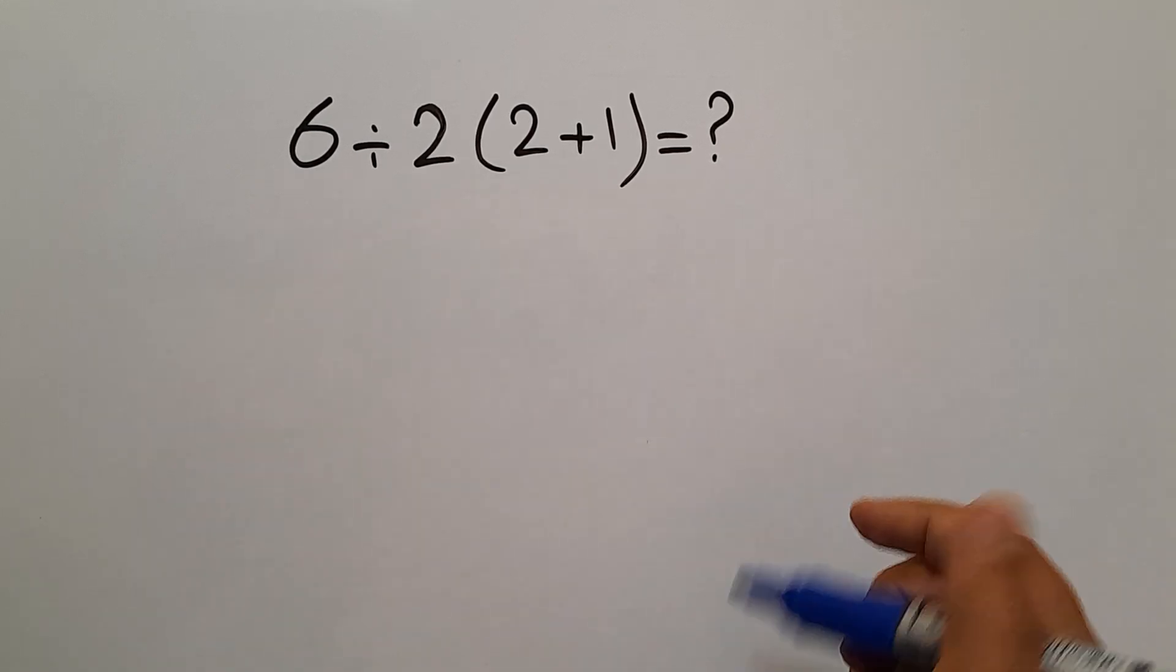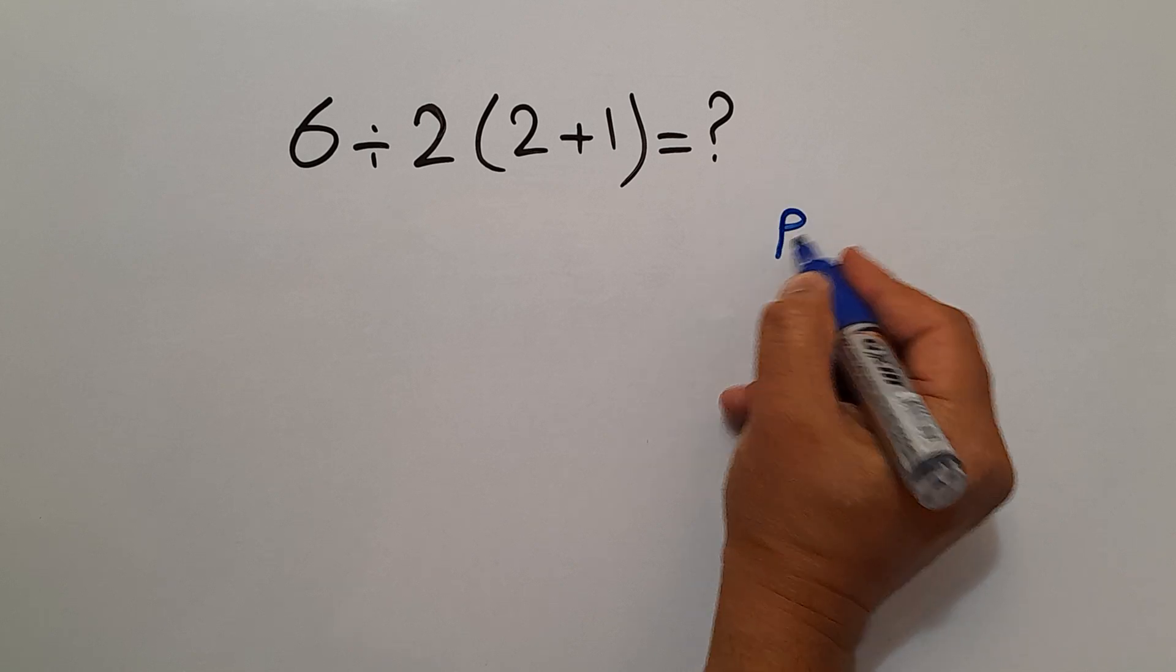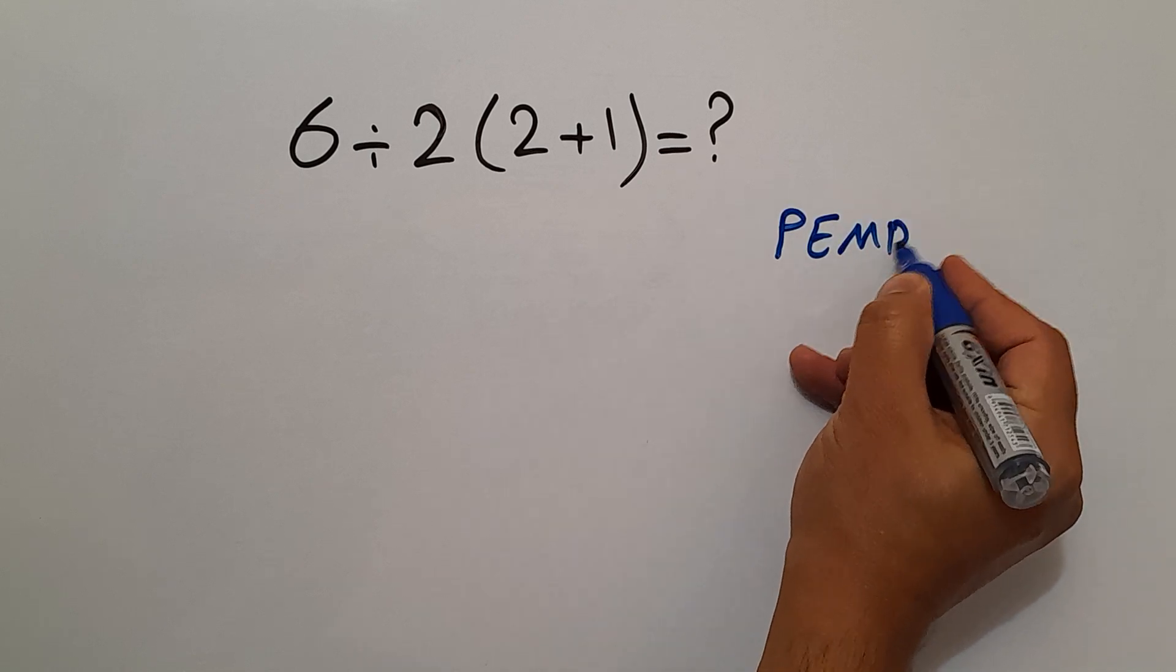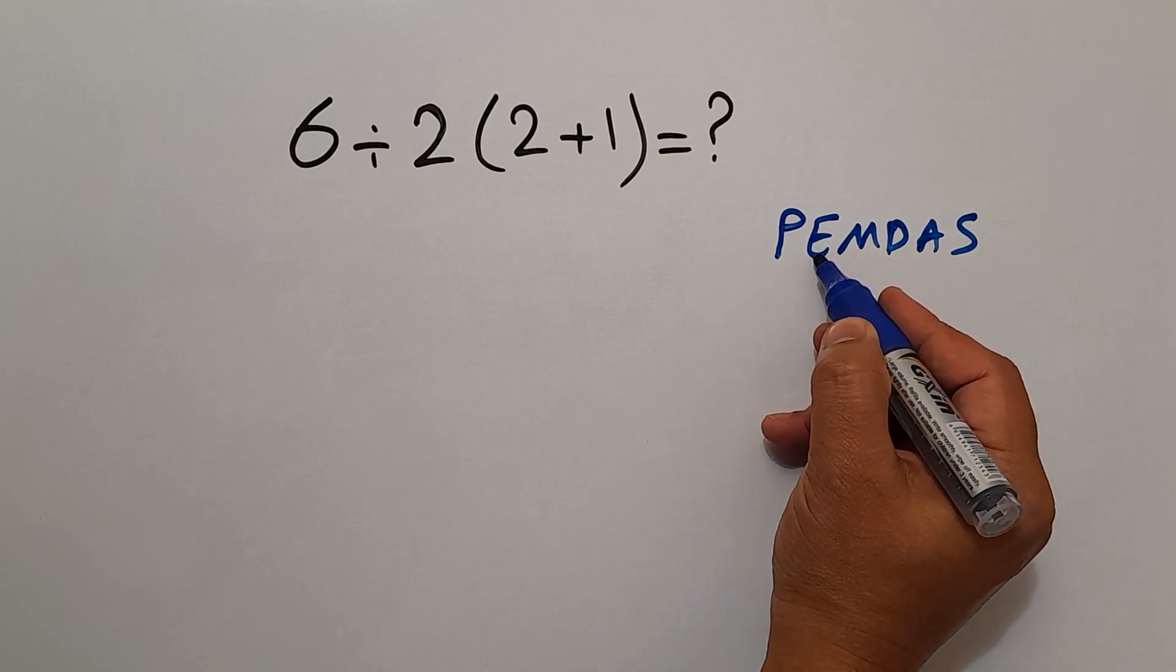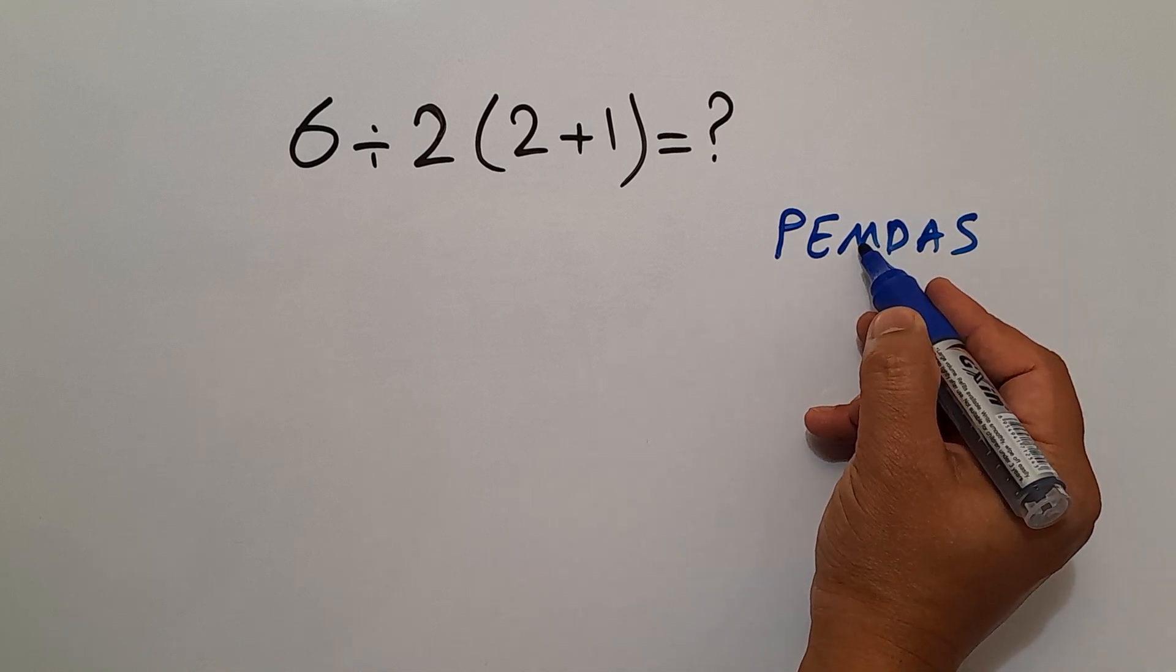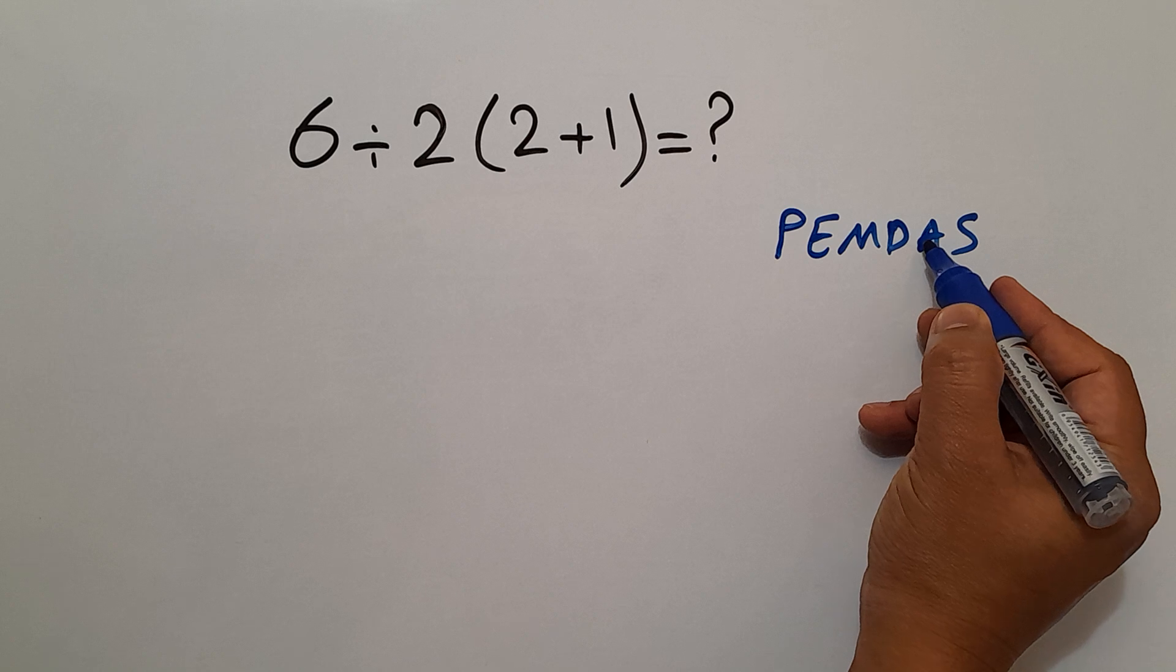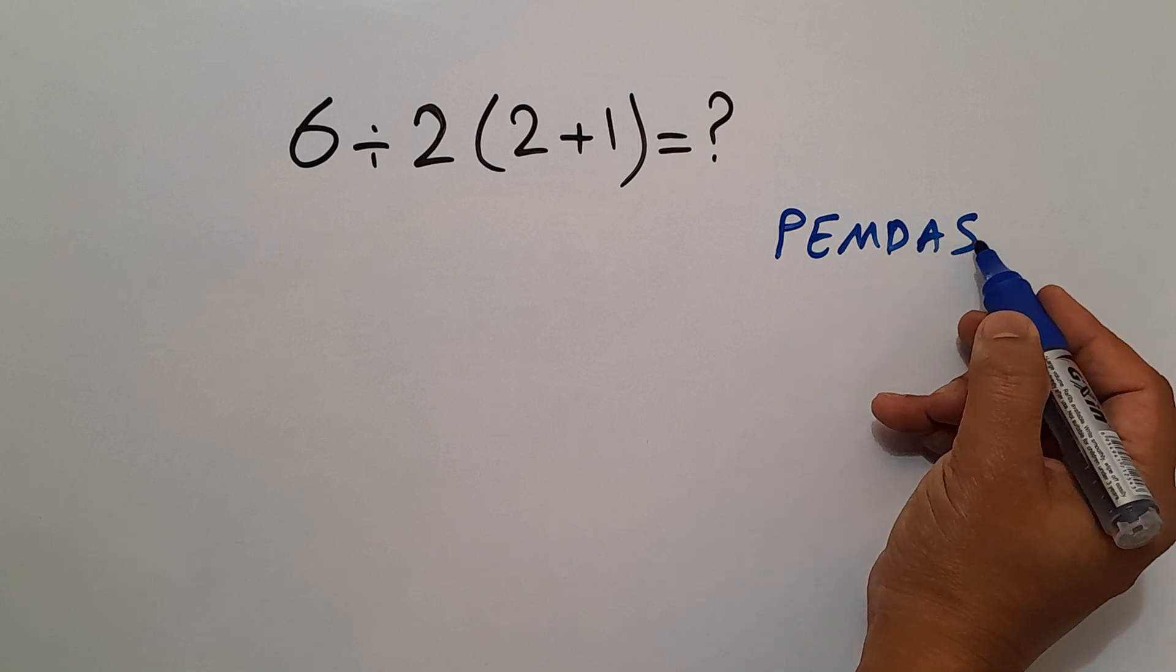Because according to the order of operations, which is PEMDAS, P stands for parentheses, E stands for exponents, M and D stand for multiplication and division, and A and S stand for addition and subtraction.